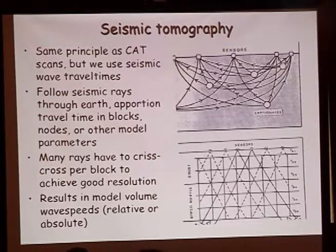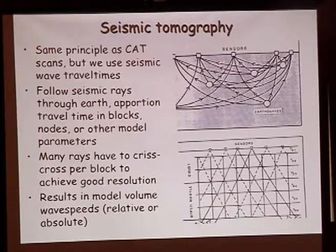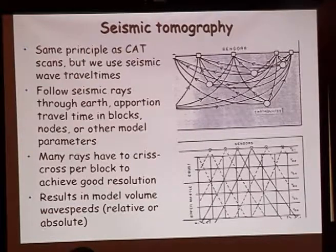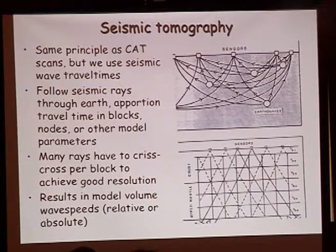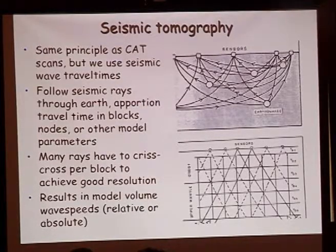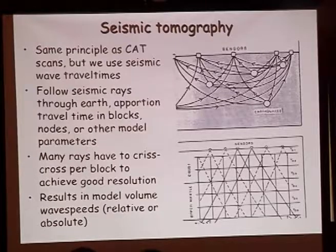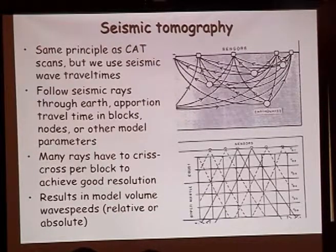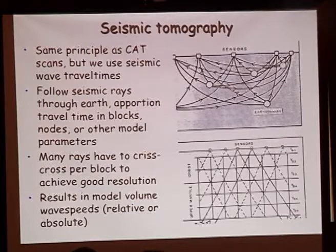With local tomography, where you're relocating earthquakes, you can actually invert for absolute velocities, and you'll also see the earthquakes used as sources. Contours can be shown as absolute velocities, though sometimes shown in perturbation form to bring out anomalies in more detail. Tomography can also be done with surface waves, which can retrieve absolute velocities. Surface waves are mostly sensitive to shear velocities, while body waves can image both P and S wave velocities.